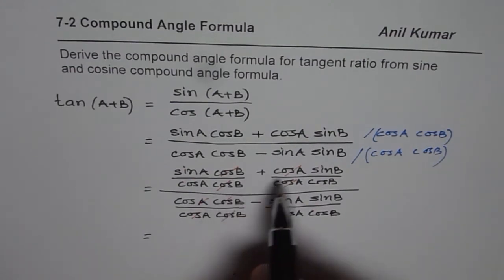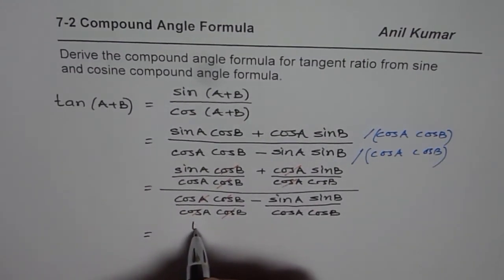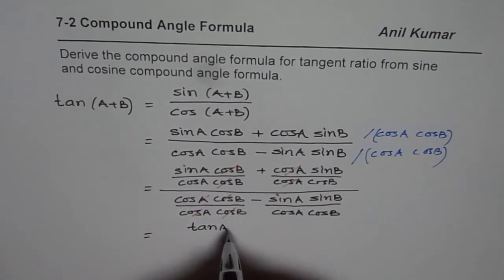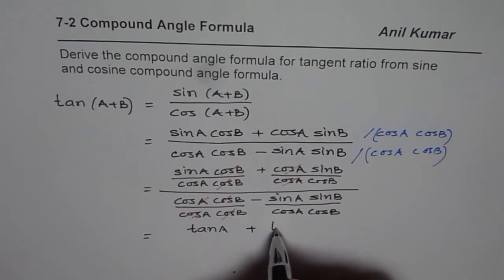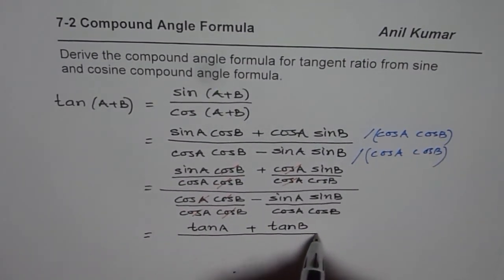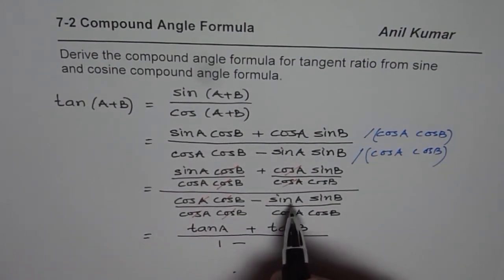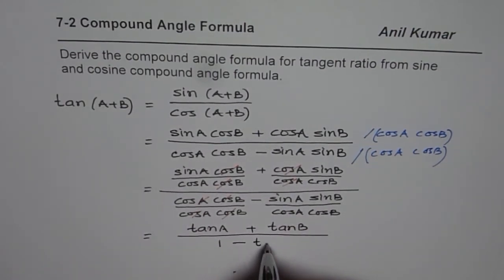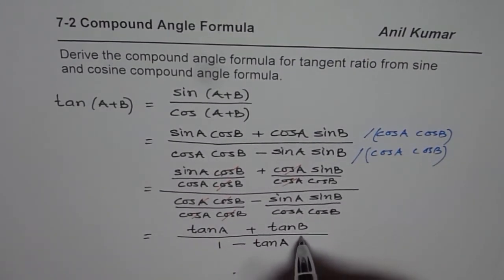So, let's rewrite after simplifying. We have to replace sine A over cos A, which is tan A, plus sine B over cos B, which is tan B, divided by 1 minus sine A over cos A, which is tan A, and sine B over cos B, which is tan B.